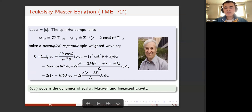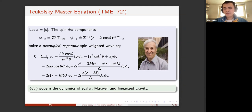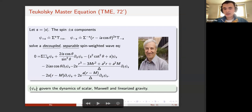The first line is a spin-weighted wave operator acting on psi_s, and the rest are some first-order derivative terms. This psi_s governs the dynamics of the scalar field, Maxwell field, and linearized gravity. The rest can more or less be recovered from the asymptotics or dynamics of psi_s after choosing a suitable gauge.